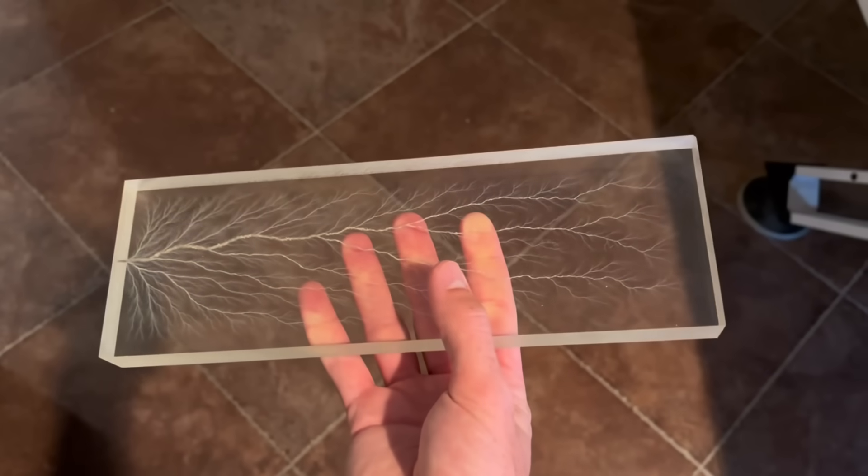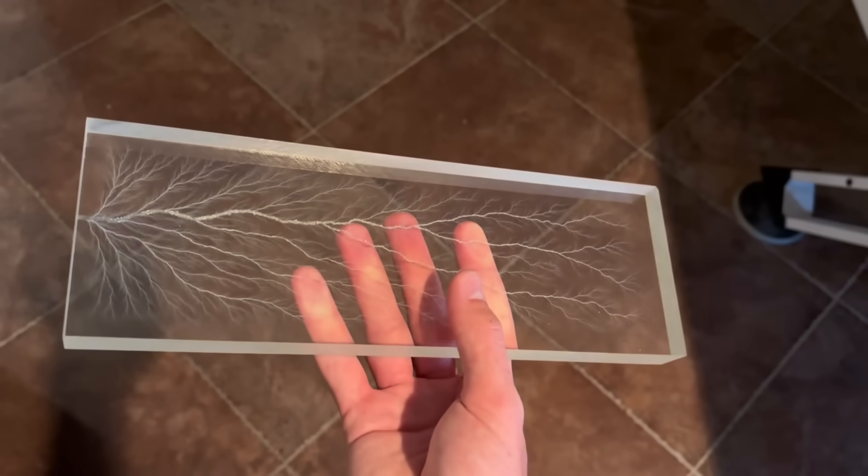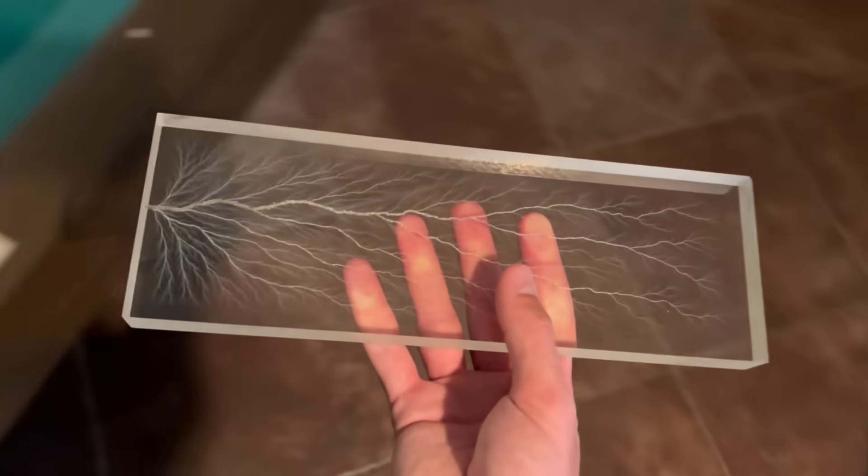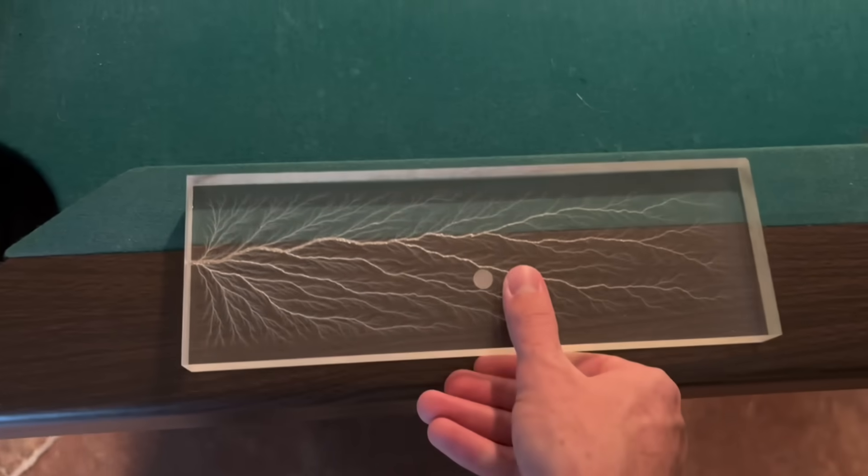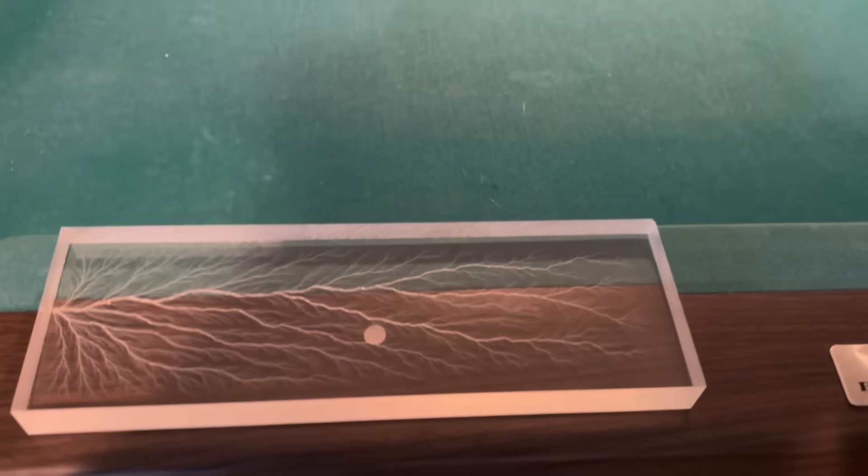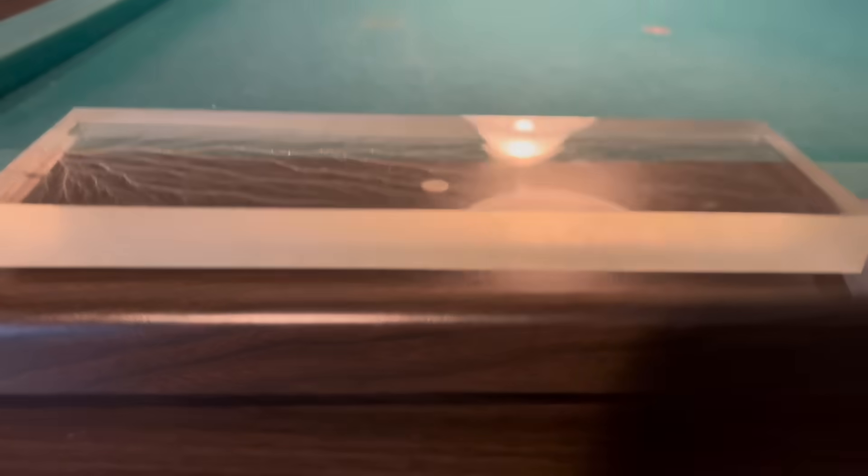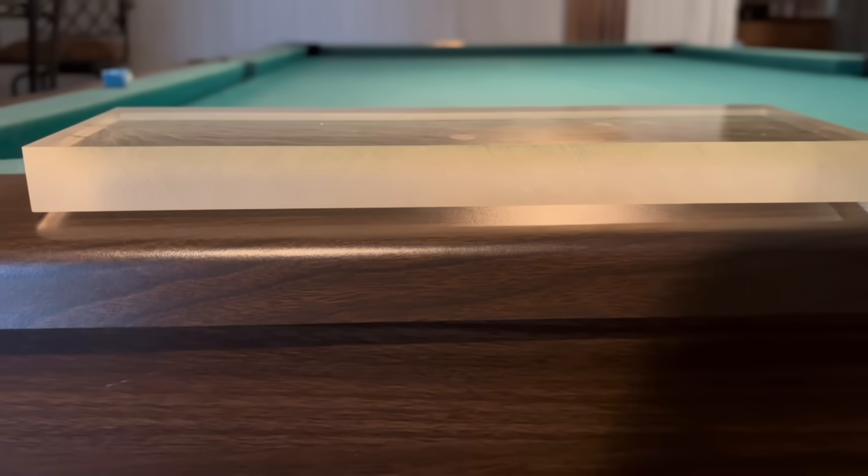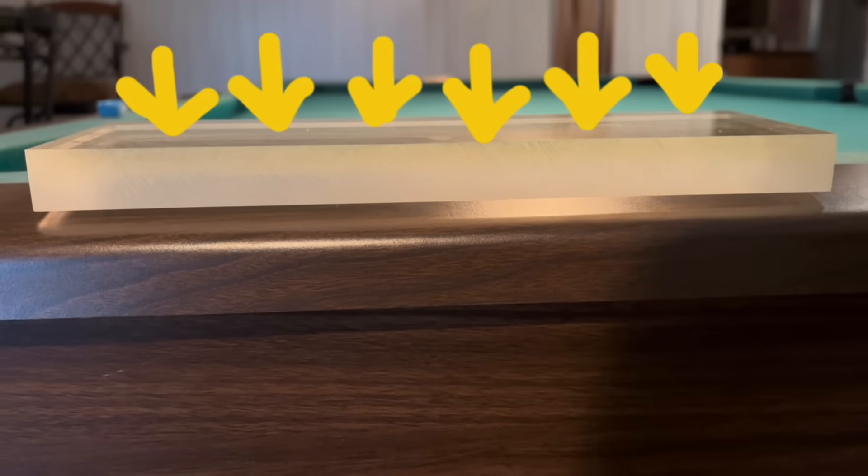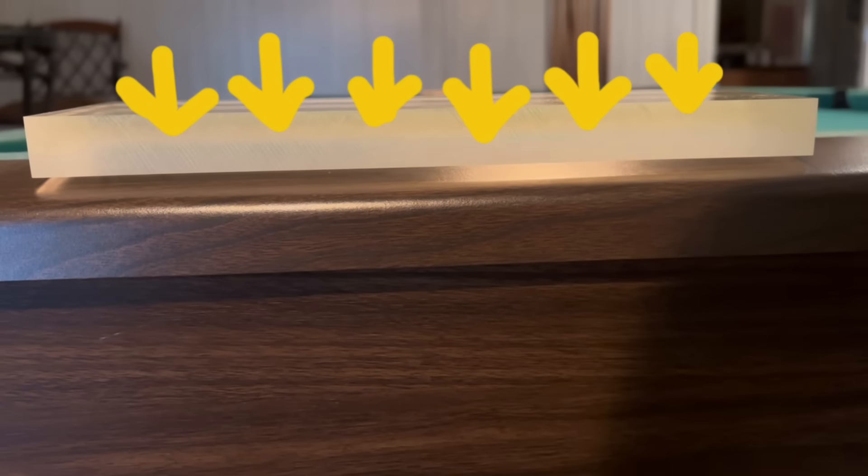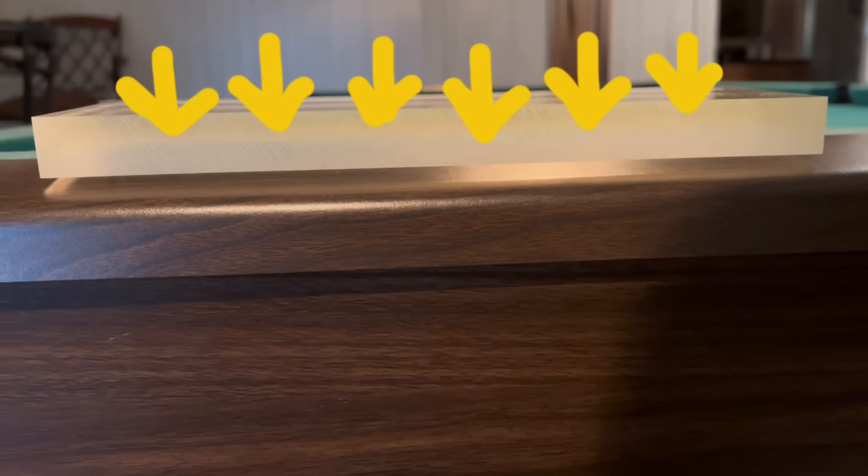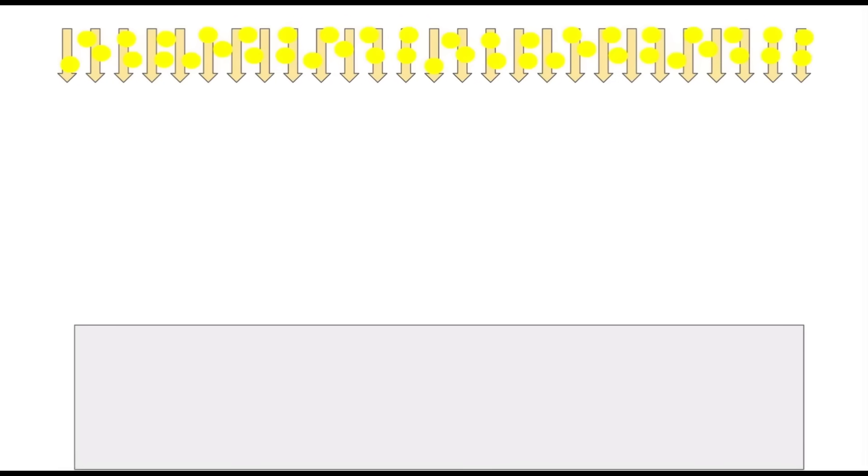So here's a piece of acrylic. First of all, I want you to imagine that Lichtenberg figure isn't there, and I'm going to lay this down flat on the table here. This is exactly the same orientation that the acrylic would be in the particle accelerator—it would be laying flat and we would have a beam of electrons coming down orthogonal to the surface of the acrylic.